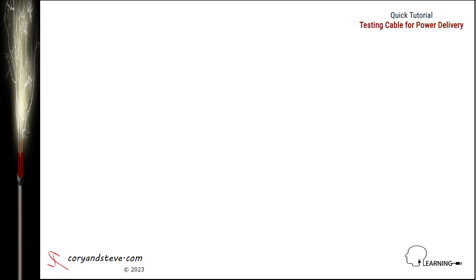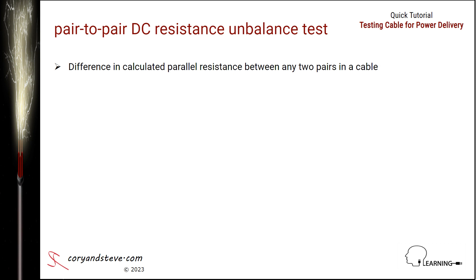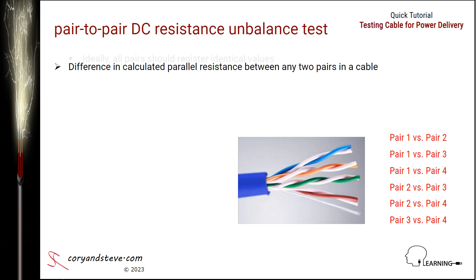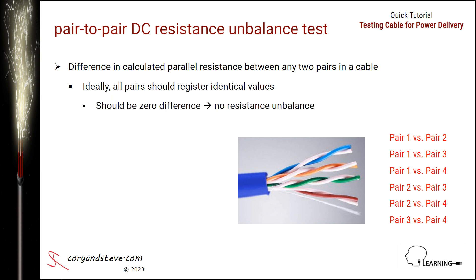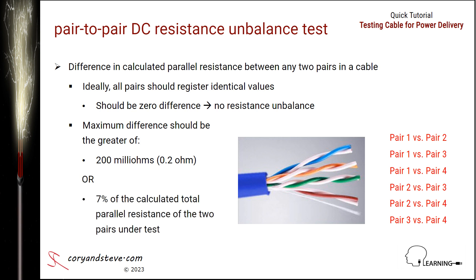Next, we'll conclude with the last of the three DC resistance tests: pair-to-pair DC resistance unbalance. This parameter is also called DC resistance unbalance, but here it's measured between any two pairs in a cable rather than between the two conductors of any single pair. Note that there are six possible combinations: pair one versus pair two, one versus three, one versus four, two versus three, two versus four, and three versus four. Ideally, all pairs should register identical values with zero difference between any of the pairs. But in the worst case, the difference should be no greater than 200 milliohms or 7% of the calculated total parallel resistance of the two pairs under test, whichever is greater.